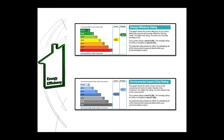You will also see a further chart on the front page of the EPC. This chart highlights the current and potential environmental impact rating of the dwelling. Where the energy efficiency rating considers both energy efficiency and fuel costs, the environmental impact rating only considers the effect of the dwelling on the environment in terms of carbon dioxide or CO2 emissions, with no financial consideration to the home occupier. The chart issues a rating from A to G, with A having the least impact on the environment.